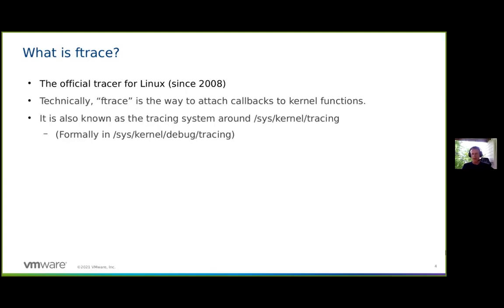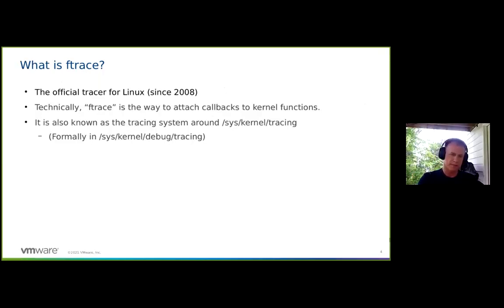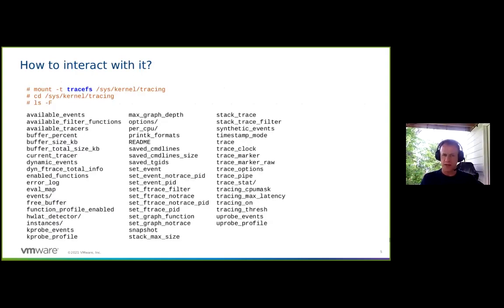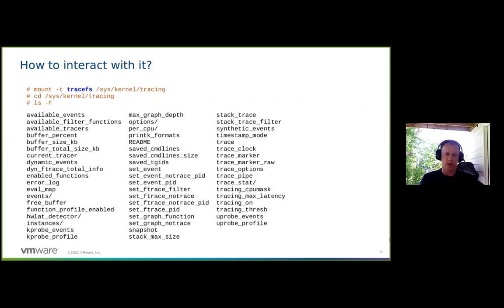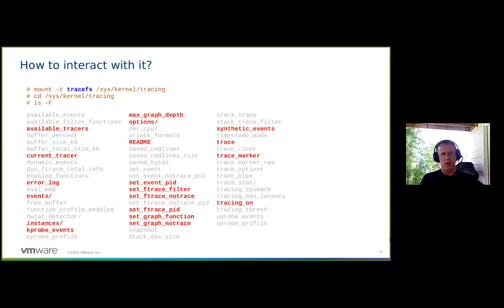If you have TraceFS compiled in, you'll see a tracing directory in /sys/kernel that you can mount. After mounting, you cd into that directory and you'll see a lot of files, which can be overwhelming. But there are really only a few files you need to care about. There's also a readme file within the TraceFS directory — yes, it does actually have a readme, though it doesn't explain everything.